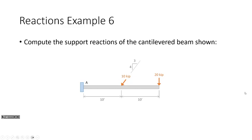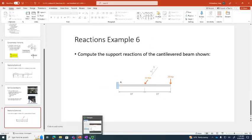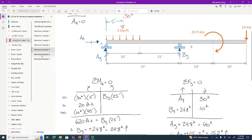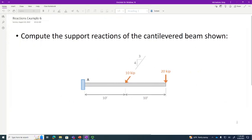I want to compute support reactions for a cantilevered beam. Of all the structures we analyze in this class — shear diagrams, moment diagrams, everything — I think cantilevered beams are among the easiest to analyze, because all the unknowns are concentrated at one point. That makes the analysis strategy much simpler.